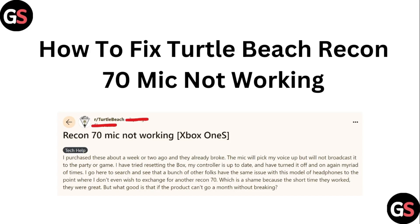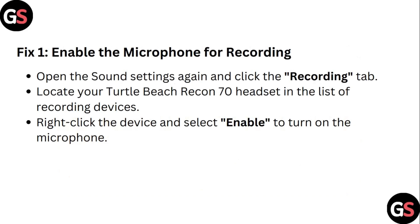Step 1: Enable the microphone for recording. Open the sound settings again and click the recording tab. Locate your Turtle Beats Rekon 70 headset in the list of recording devices. Right click the device and select enable to turn on the microphone.